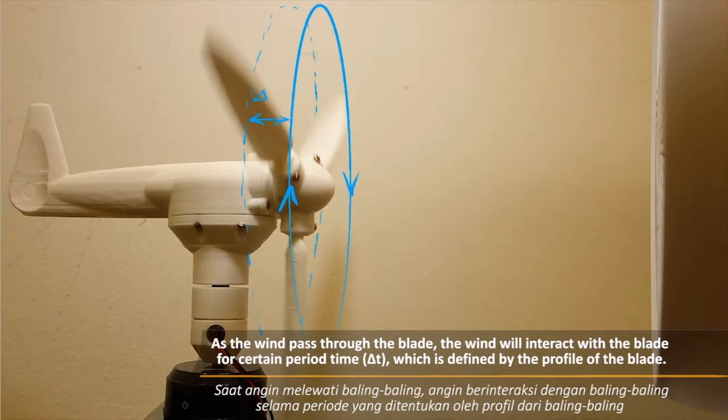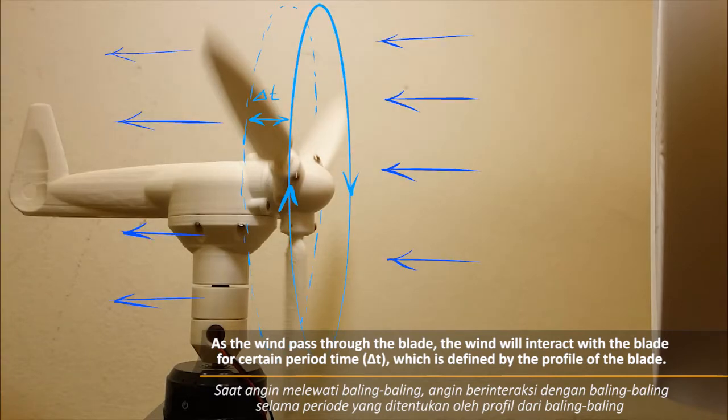As the wind passes through the blade, the wind will interact with the blade for a certain period of time, delta t, which is defined by the profile of the blade.